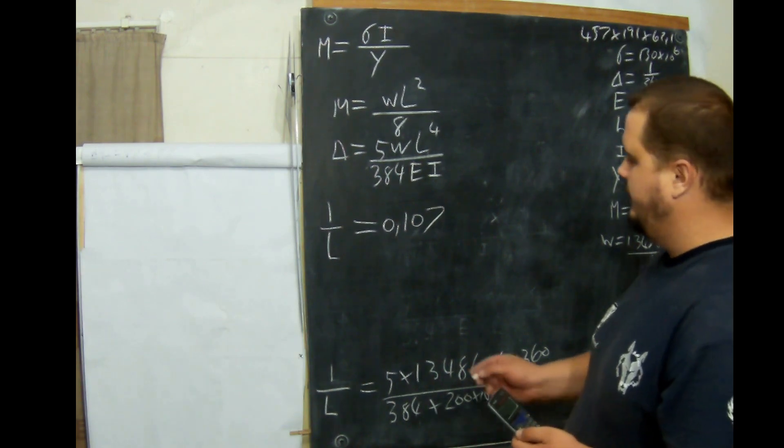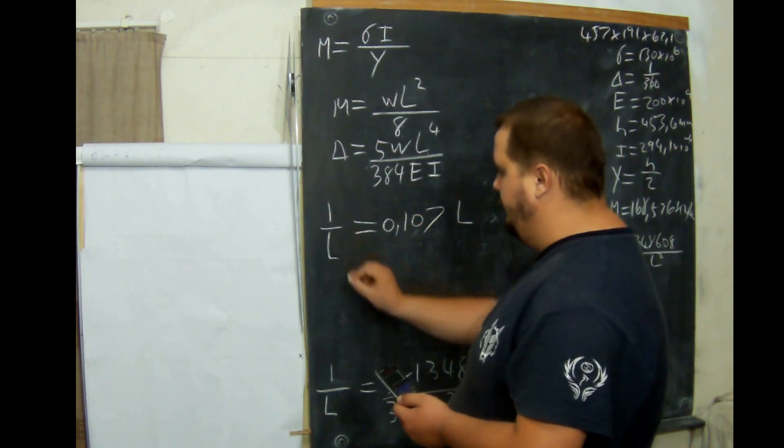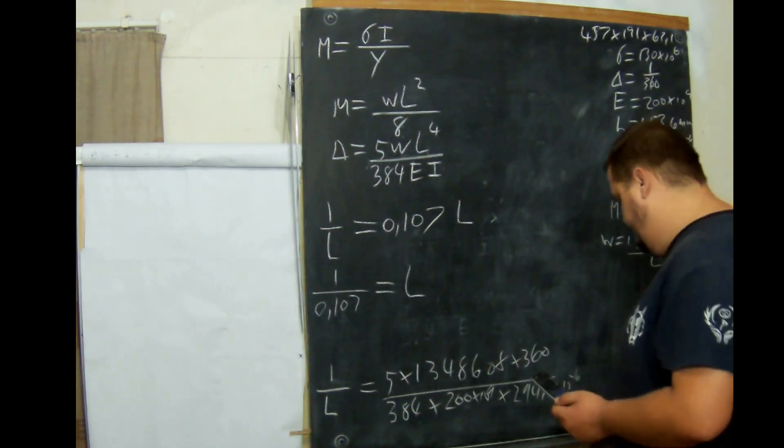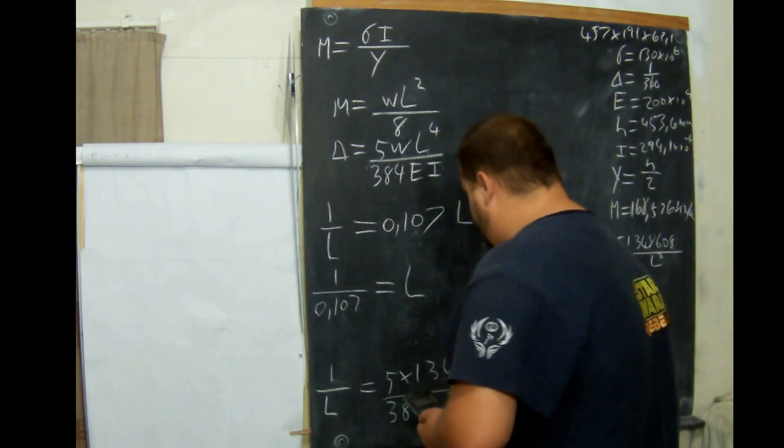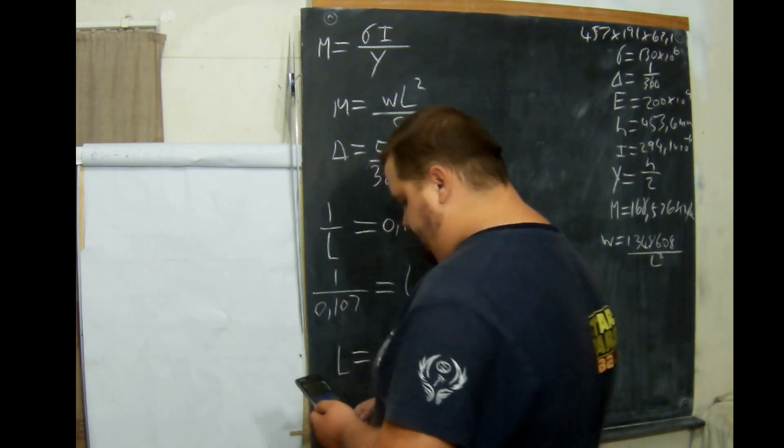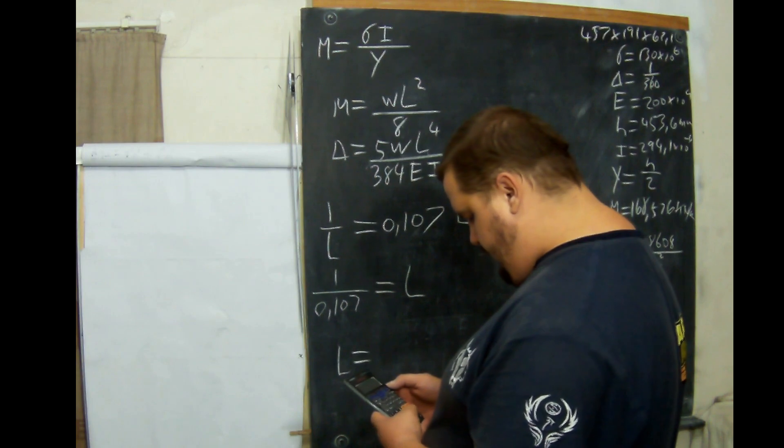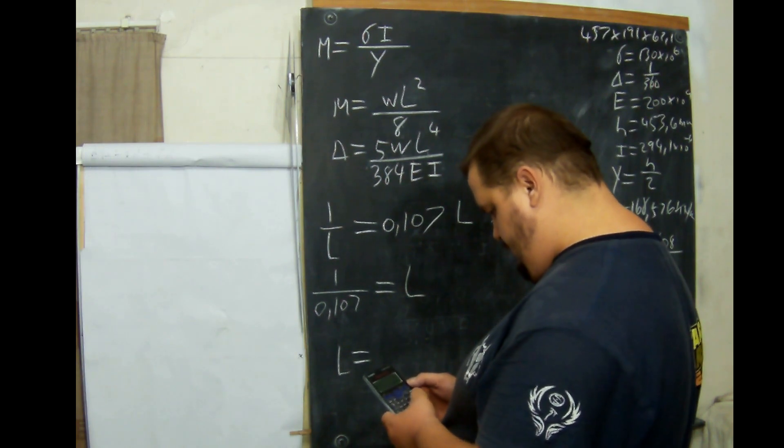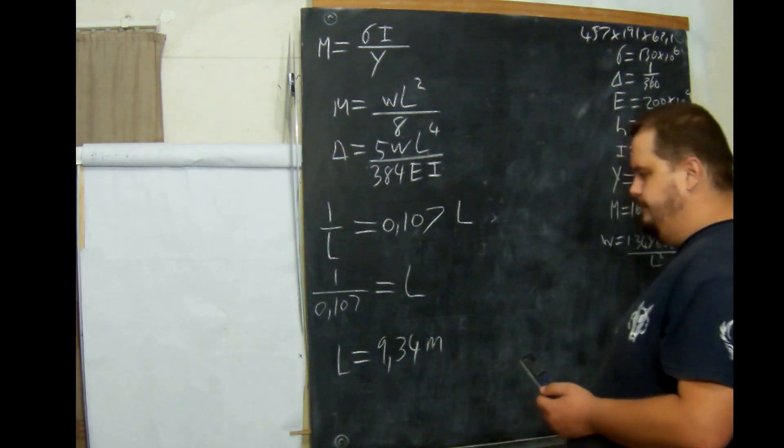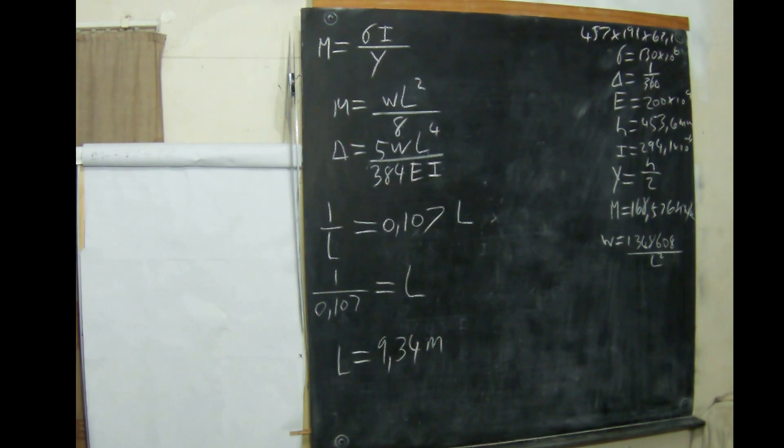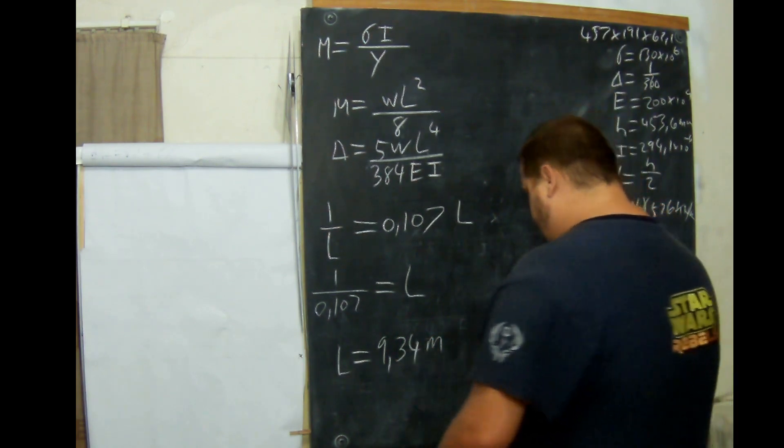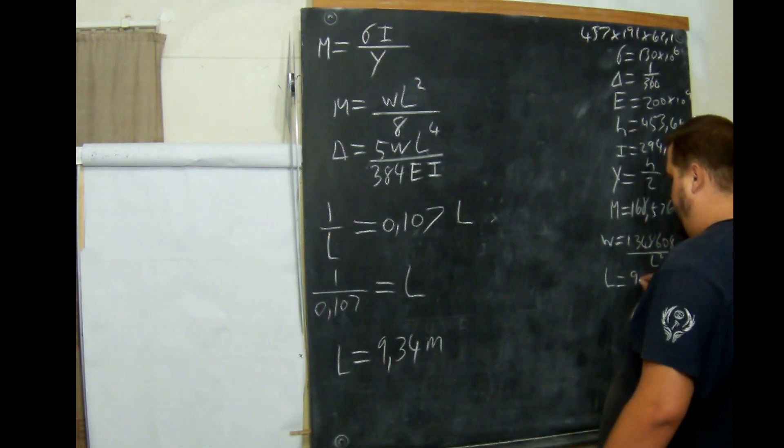So to get L by itself, we multiply by L and bring that one down here. So 1 over 0.107 equals L. That's how we get L by itself. And L equals 9.34 meters. So this is how long our beam is. That is the length of our beam.